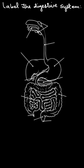Hello everyone. In this question we are asked to label the digestive system. Here we have the diagram of the digestive system. First of all, the opening of the digestive system — the digestive system starts with the mouth, or you can also call it the oral cavity. So here we have the mouth.